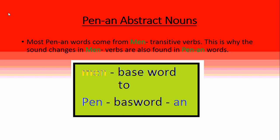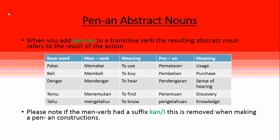Most pen-an words come from men or me transitive verbs, which is why the sound changes in the me verbs are also found in the pen-an abstract nouns. Looking at the process: you have men plus the base word, and for the abstract noun it's per plus the base word plus an. When you add pen-an to a transitive verb, the resulting abstract noun refers to the result of the action.